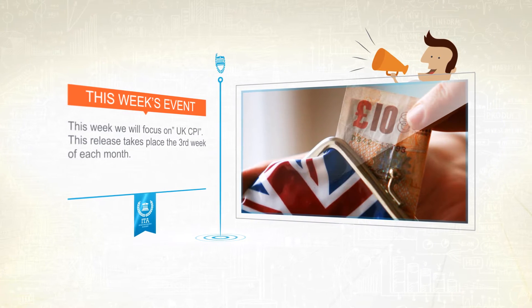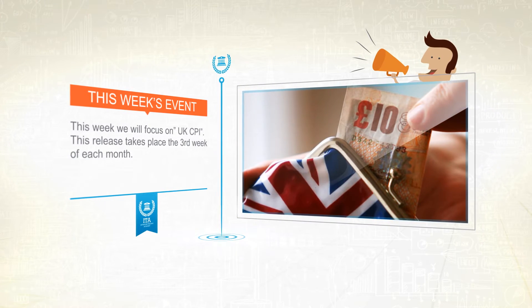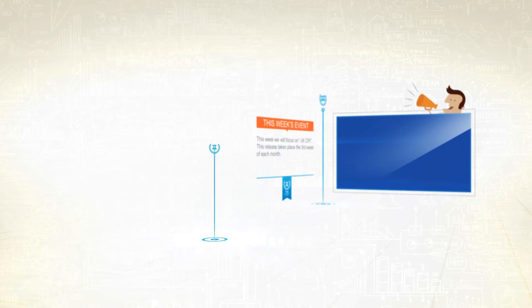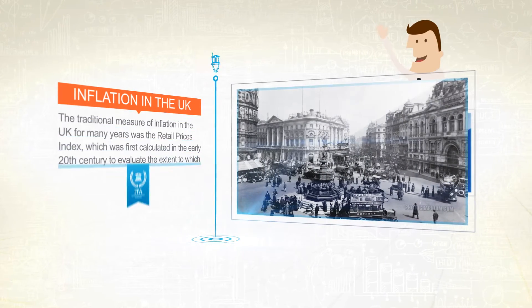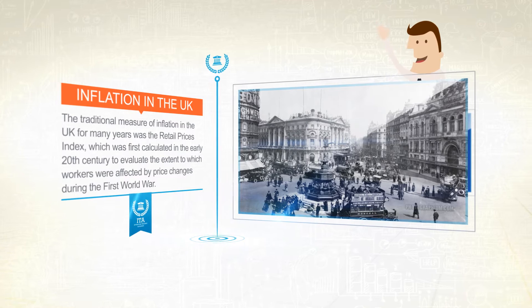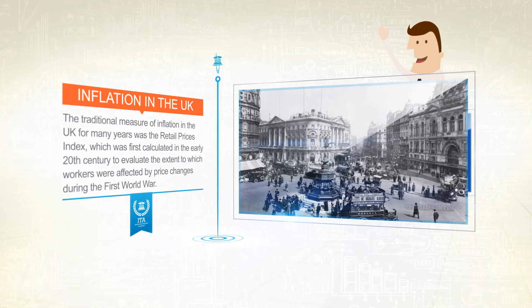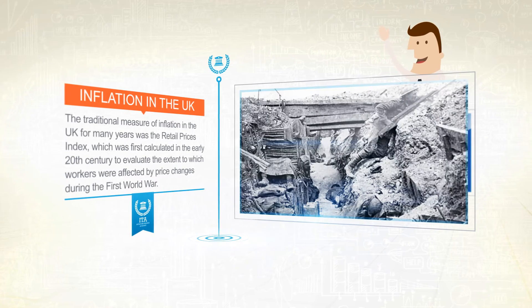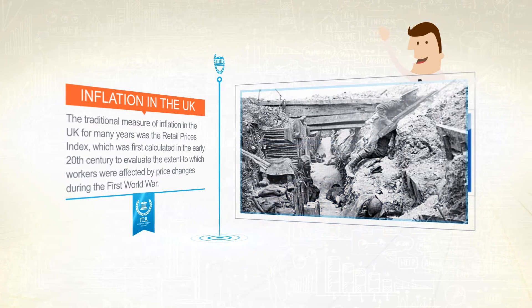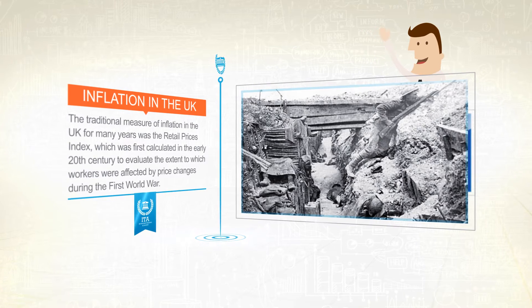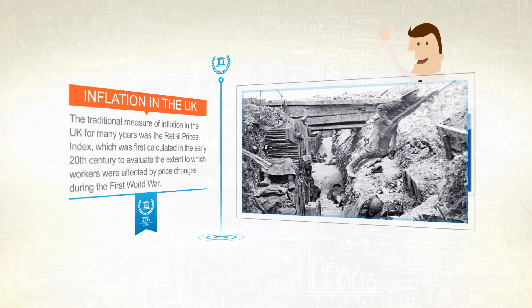The abbreviation stands for Consumer Price Index. The traditional measure of inflation in the UK for many years was the Retail Prices Index, which was first calculated in the early 20th century to evaluate the extent to which workers were affected by price changes during the First World War.